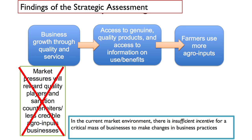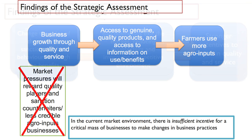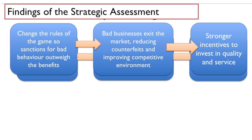As a result, the critical mass of businesses were not making any changes in their behavior. What was determined then was that actually what we needed to do was to change the rules of the game — basically to create more incentives for good quality and more disincentives for counterfeits and bad competition, which was based only on price, not on quality and service.